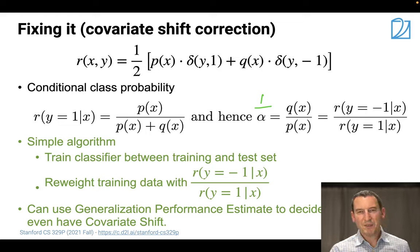Now, the good news is this gives us a super simple algorithm, namely, just go and train a classifier between training and test set, reweight the training data with that ratio, and then you can use a generalization performance estimate to decide whether we even have covariate shift. Because the good thing is, this doesn't just give us a fix. It also gives us a test statistic to tell us whether that fix is even needed.